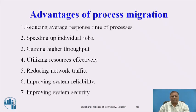Gaining Higher Throughput: In a system with process migration facility, the capabilities of CPUs of all the nodes can be better utilized by using a suitable load balancing policy, which improves the throughput of the system. Utilizing Resources Efficiently: In a distributed system, hardware and software resources of different nodes can be efficiently utilized by migrating the process to suitable nodes based on its requirements. Reducing Network Traffic: Migrating a process closer to a resource it uses heavily and frequently — such as files or printers — may reduce network traffic. Migrating and clustering processes that frequently communicate with each other on the same node also reduces network traffic.